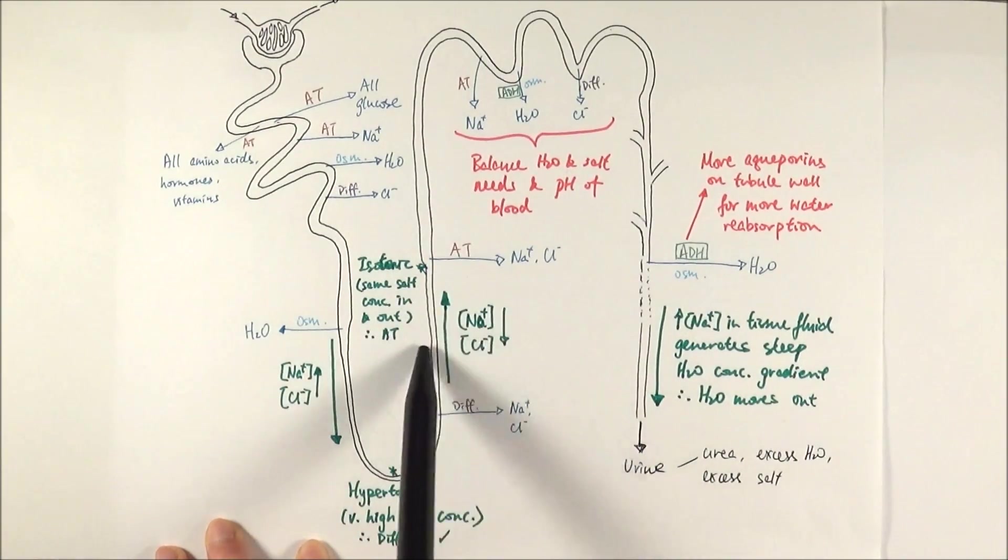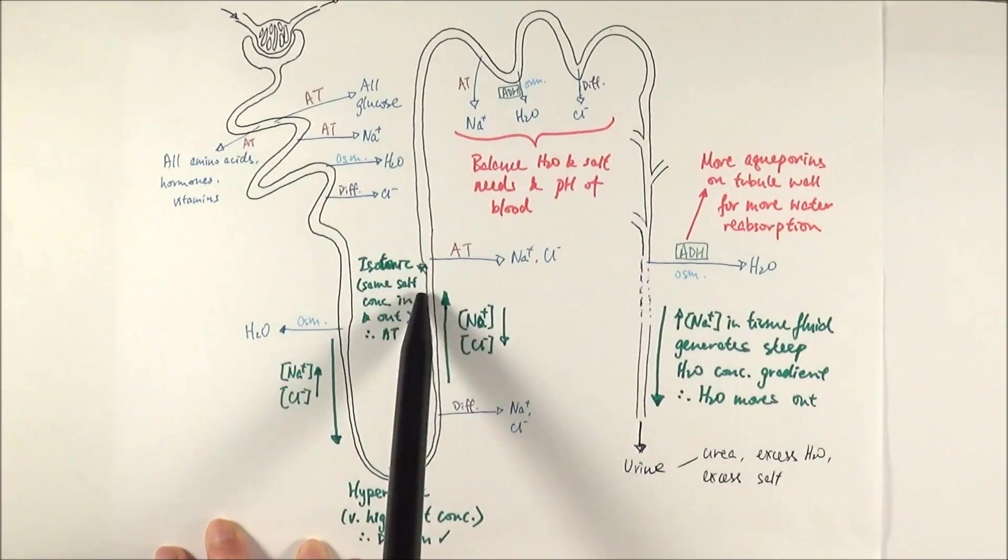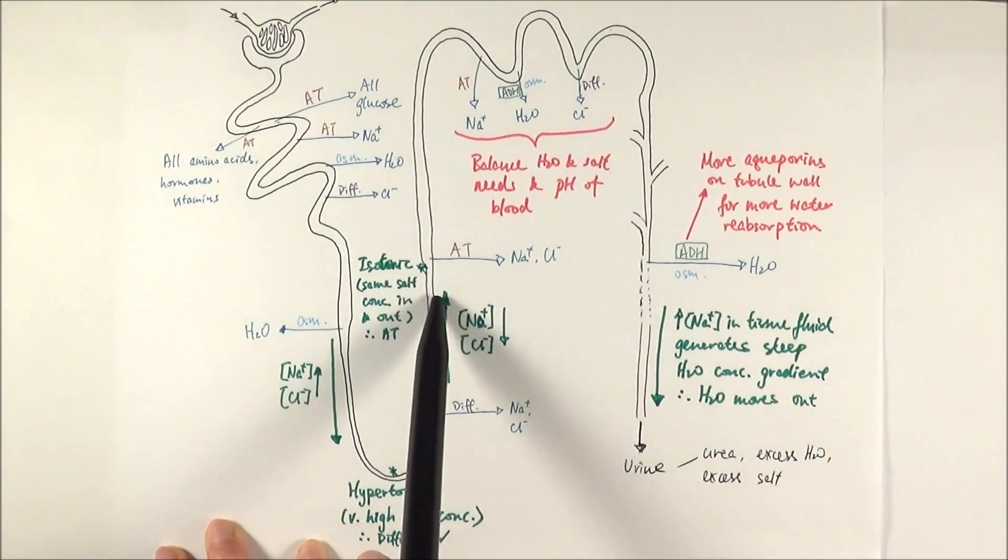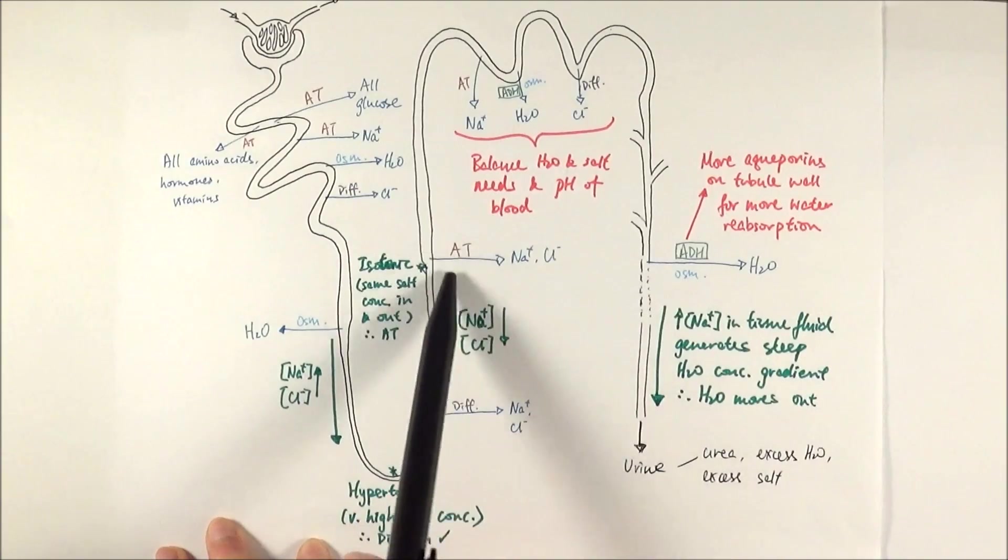And because it does this, as we go up, more and more salt is being removed by diffusion. So the concentration of salt in the filtrate decreases. Then it reaches an isotonic point where there is about the same concentration in and out of the filtrate. So therefore, if the body wants to still get more salt back, it will do active transport.